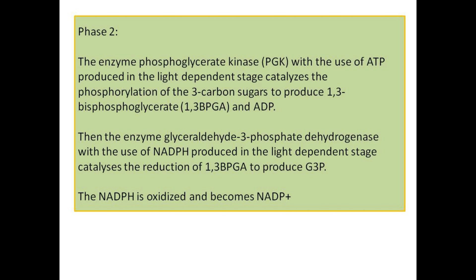Phase 2: The enzyme phosphoglycerate kinase, with the use of ATP produced in the light-dependent stage, catalyzes the phosphorylation of the three-carbon sugars to produce 1,3-bisphosphoglycerate and ADP. Then the enzyme glyceraldehyde-3-phosphate dehydrogenase, with the use of NADPH produced in the light-dependent stage, catalyzes the reduction of 1,3-bPGA to produce G3P. The NADPH is oxidized and becomes NADP+.